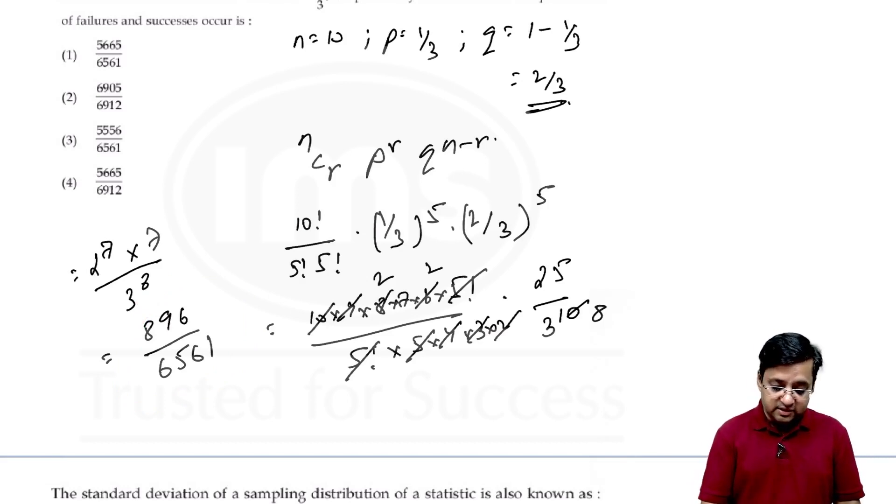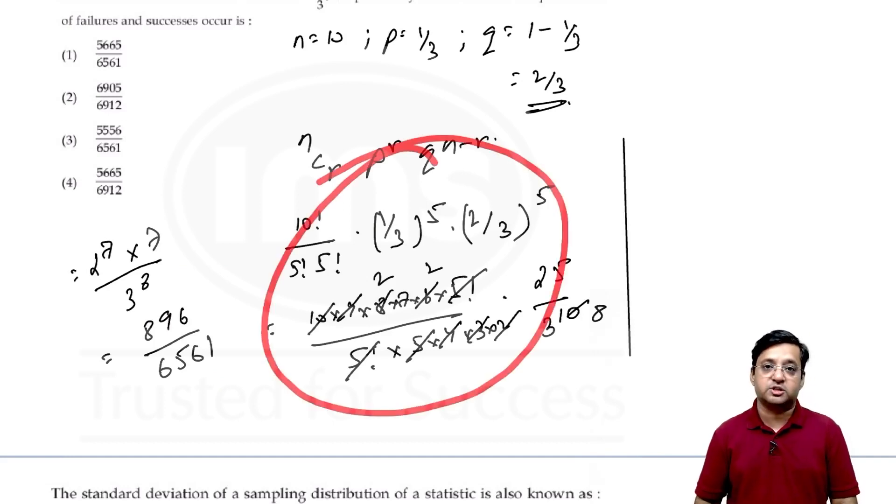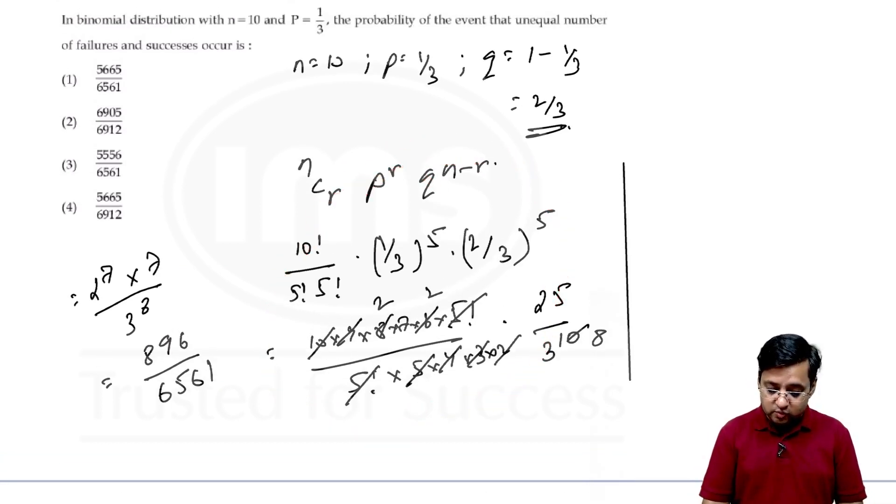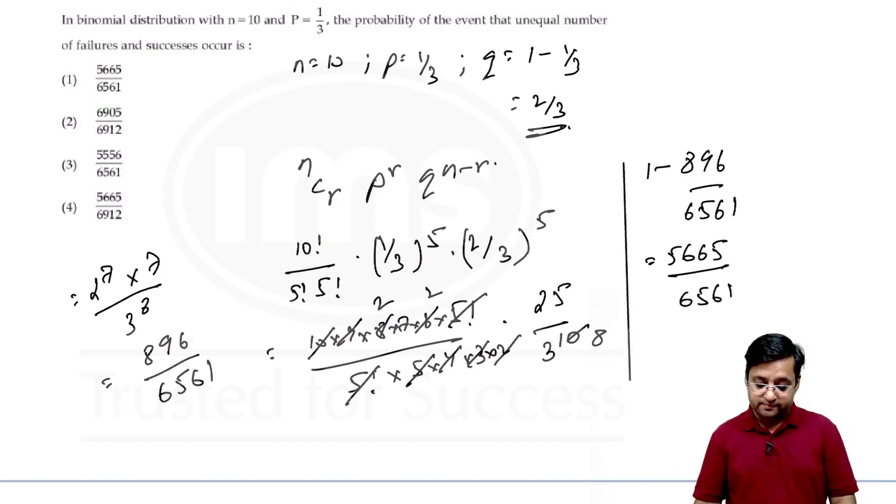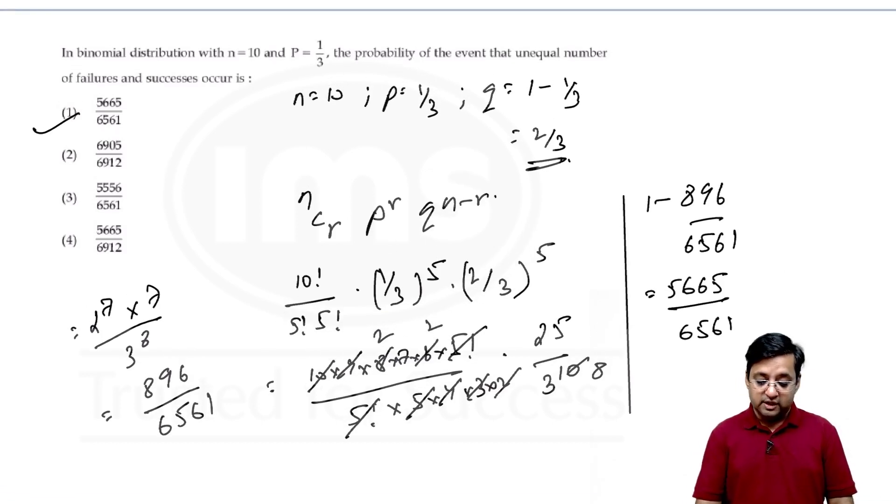Now is this my answer? No. Because we need to find unequal portion but we are trying to find the equal portion first. What we can do now? We can do 1 minus 896 by 6561 which is going to give me 5665 by 6561 and this is option number 1. So in this question we cannot find an unequal number of distributions of success and failure instantly, so we find an equal number first and then subtract it from 1 to get the answer.